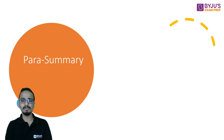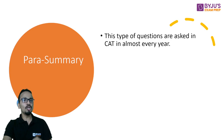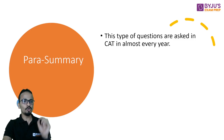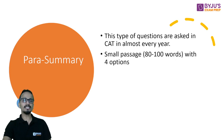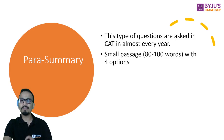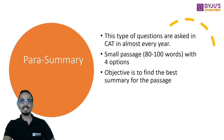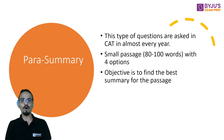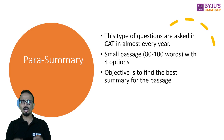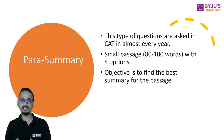Para Summary questions appear in almost every CAT. They give you a small passage of around 80 to 100 words followed by four options, and you must pick the best summary of that passage. All these questions — Para Jumbles, Para Summary, and Reading Comprehension — require a lot of reading within those 40 minutes.